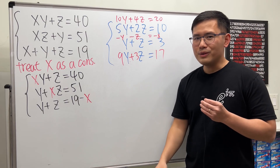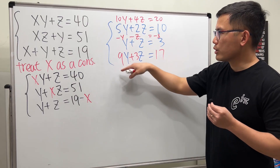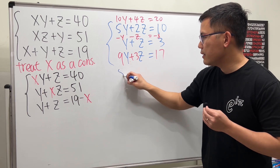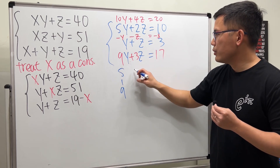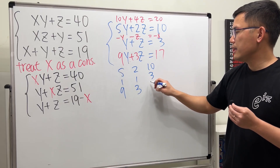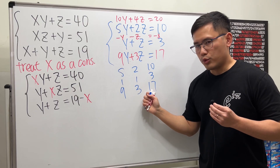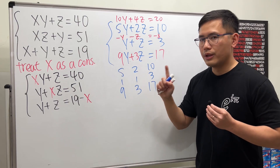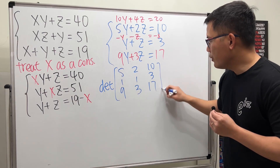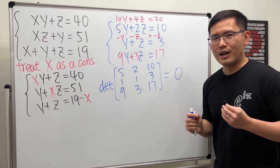This is where linear algebra comes in. Let's look at the system as a matrix — write down the coefficients: 5, 1, 9 / 1, 1, 3 / 10, 3, 17. If one of the rows is a linear combination of the other two, then the determinant of this matrix will be zero.